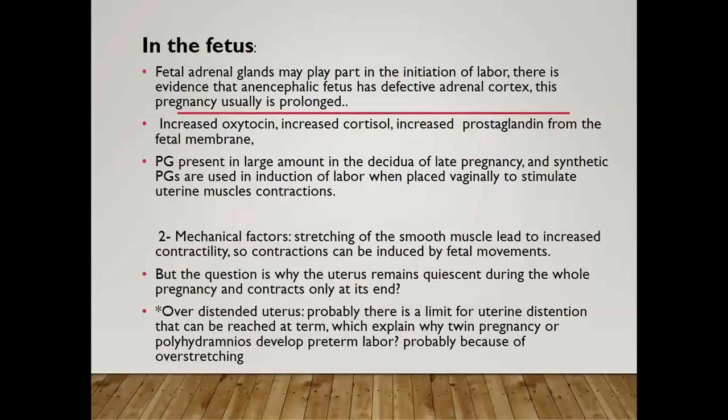Prostaglandin is present in large amounts in the decidua of later pregnancy, and synthetic prostaglandins are used to induce labor when placed vaginally to stimulate uterine contraction. The decidua could secrete prostaglandin near the time of labor to initiate it.